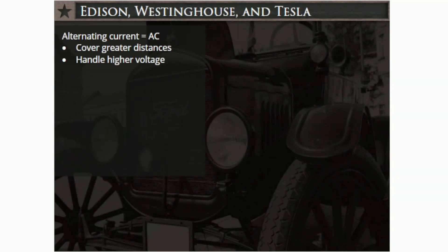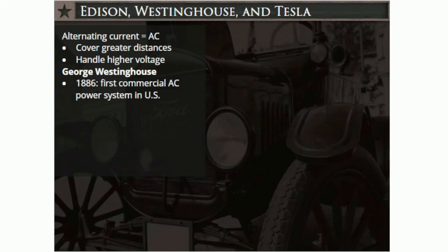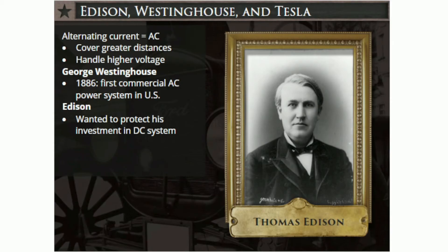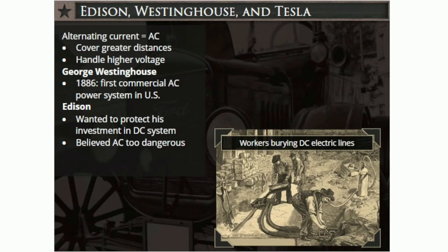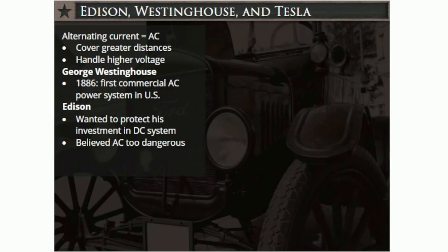To cover greater distances that could also handle higher voltage, alternating current or AC was required. With AC, the electric charge periodically reverses direction and is transmitted to customers by a transformer. The first commercial AC power system in the US was developed by George Westinghouse in 1886. Edison, who wanted to protect his investment in the DC system, also believed alternating current — particularly because of its use of high voltage — was too dangerous. Even though New York City did not require it, Edison buried his DC power lines in the ground, while AC was distributed overhead via power lines strung across poles. A number of deaths in New York City and in other places across the US had resulted from the pole-mounted high voltage AC power lines. Edison embarked upon a media campaign in hopes of directing public opinion against the use of AC systems. Soon, what became known as the War of the Currents ensued.